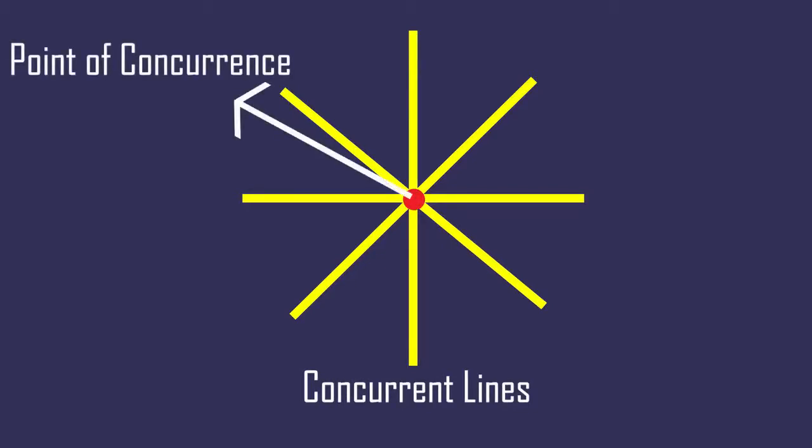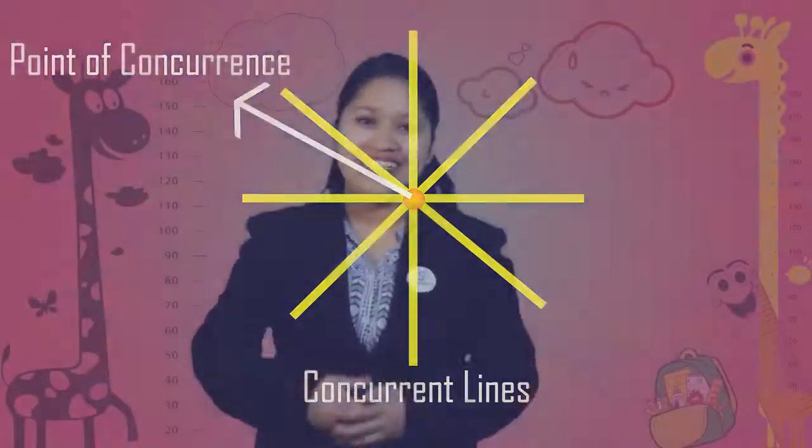But when three or more than three lines are passing through same point, then they are called concurrent lines, and that point is called the point of concurrence.